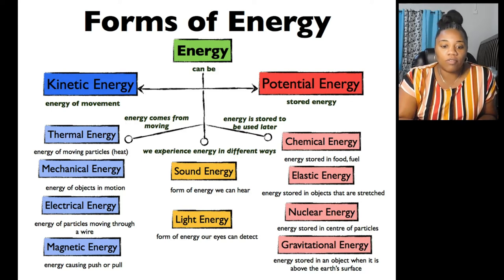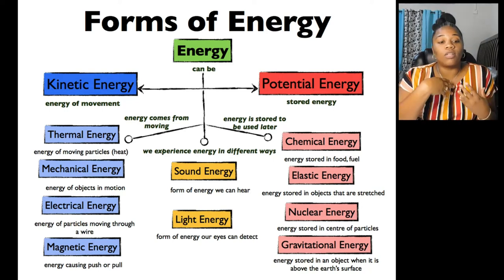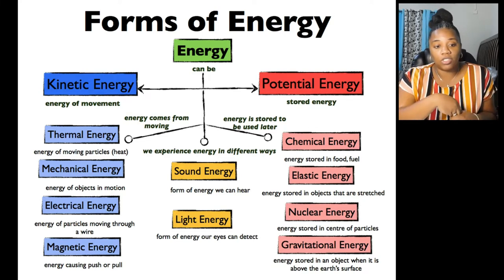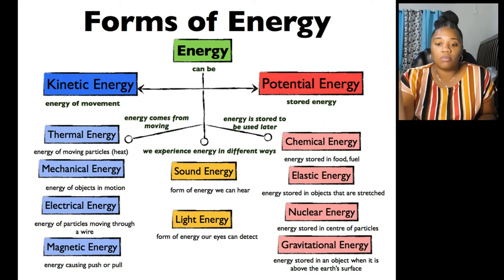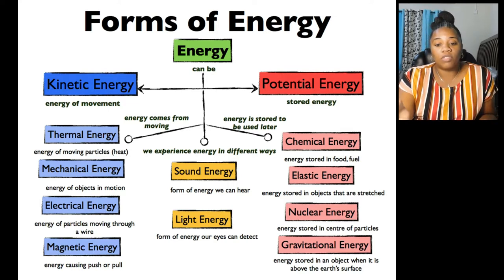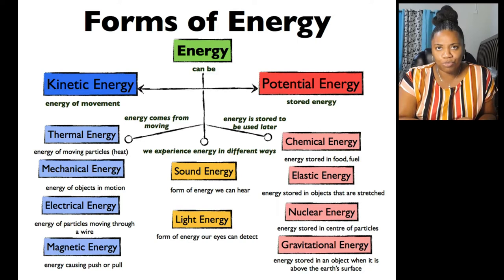You also have sound energy, which is a form of energy we can hear, and light energy. So kinetic energy has subtypes — thermal, mechanical, and electrical — and potential energy has subtypes: chemical, elastic, nuclear, and gravitational. For instance, if you say an elastic band has potential energy, you can specify it has elastic energy. Or you could say food has chemical energy — that's a type of potential energy.